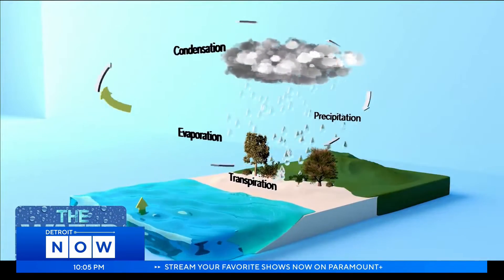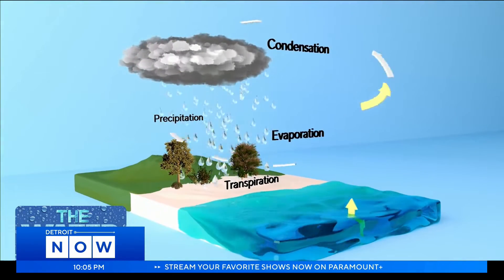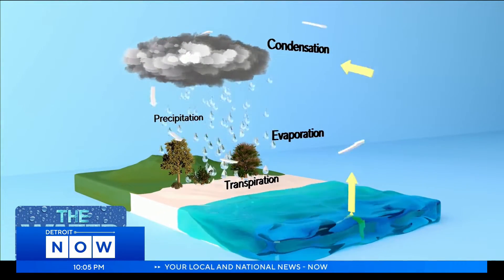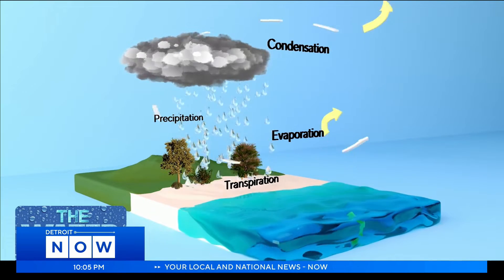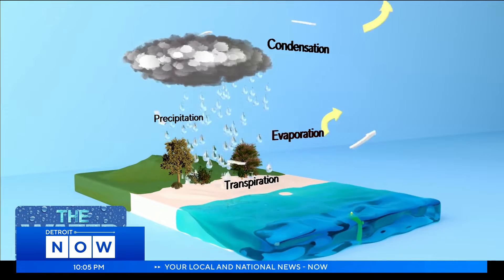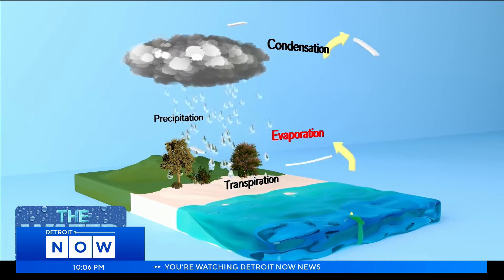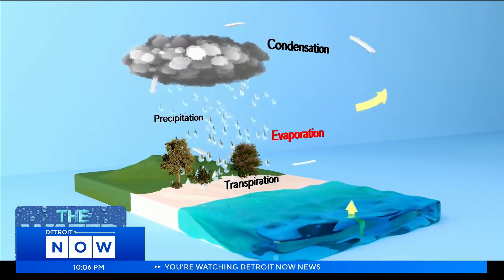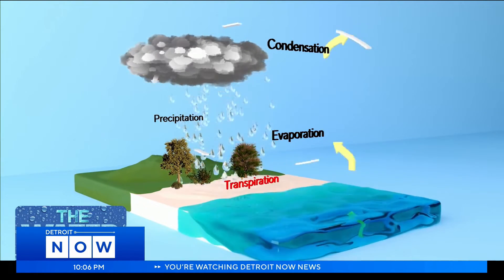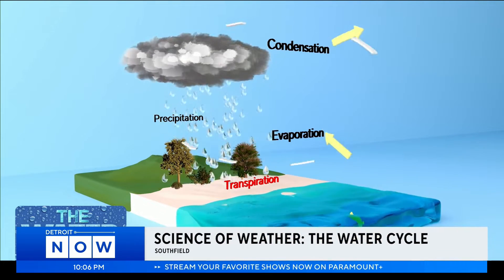Evaporation, condensation, precipitation — it's the water cycle. The water cycle goes on and on. It's the continuous movement of water from the earth and the atmosphere. The heat from the sun causes water from all bodies of water, like oceans, rivers, lakes, and streams, to evaporate. Evaporation occurs when liquid water from the surface of the earth changes phase to water vapor in the atmosphere. Transpiration can also occur through the movement of water going into the atmosphere from plants and trees.